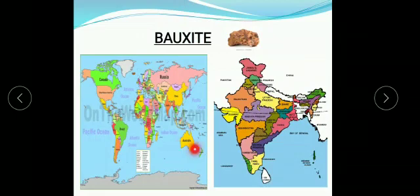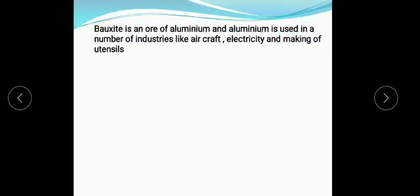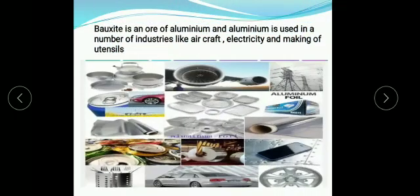Bauxite. Australia is the topmost producer of bauxite, followed by China and Brazil. Odisha is the largest producer of bauxite in India, followed by Jharkhand and Gujarat. Bauxite is an ore of aluminium, and aluminium is used in a number of industries like aircraft, electricity, and making of utensils.